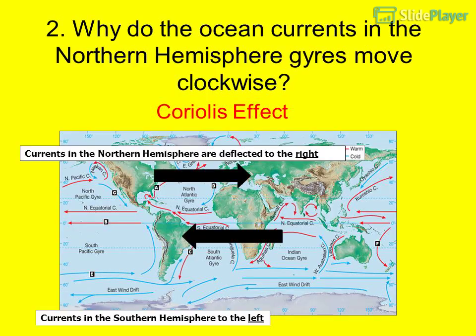Question 2: Why do the ocean currents in the northern hemisphere gyres move clockwise? Coriolis effect — currents in the northern hemisphere are deflected to the right, and currents in the southern hemisphere are deflected to the left.